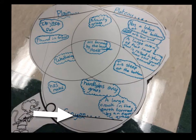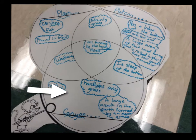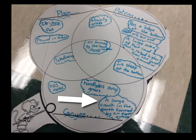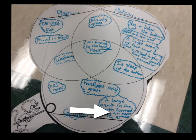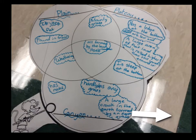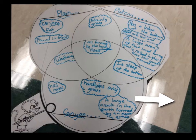A canyon has rocks, hardly has any grass, and is also a large crack in the earth formed by an earthquake. And it looks smaller than that.